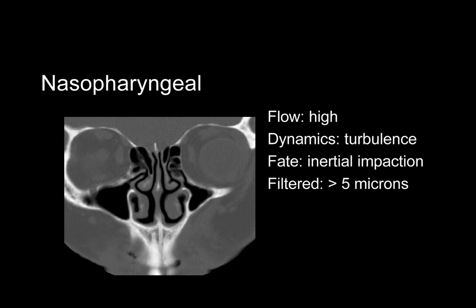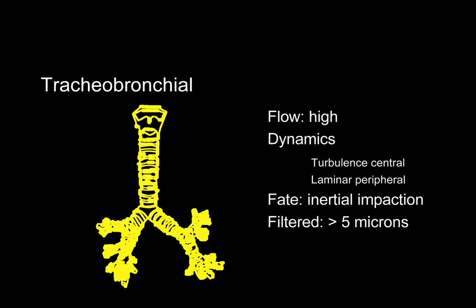A large portion of the protection occurs in the nasopharynx. Air flow is directed through two 90-degree turns through a baffling system such that most particles more than 5 microns in size are removed. Inertial impaction continues in the tracheobronchial airways as particles are directed to the airway wall or driven into bifurcation points, effectively removing particles more than 5 microns in diameter.